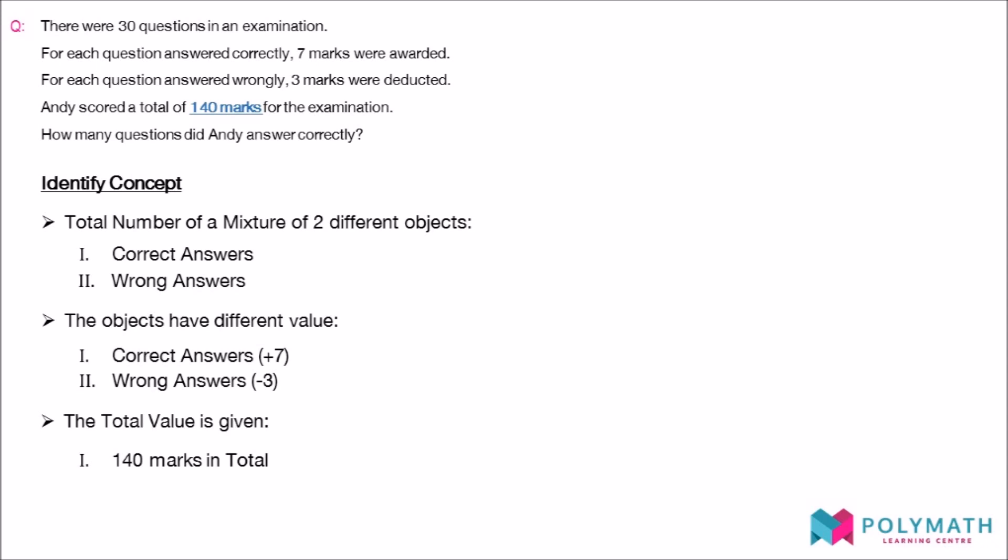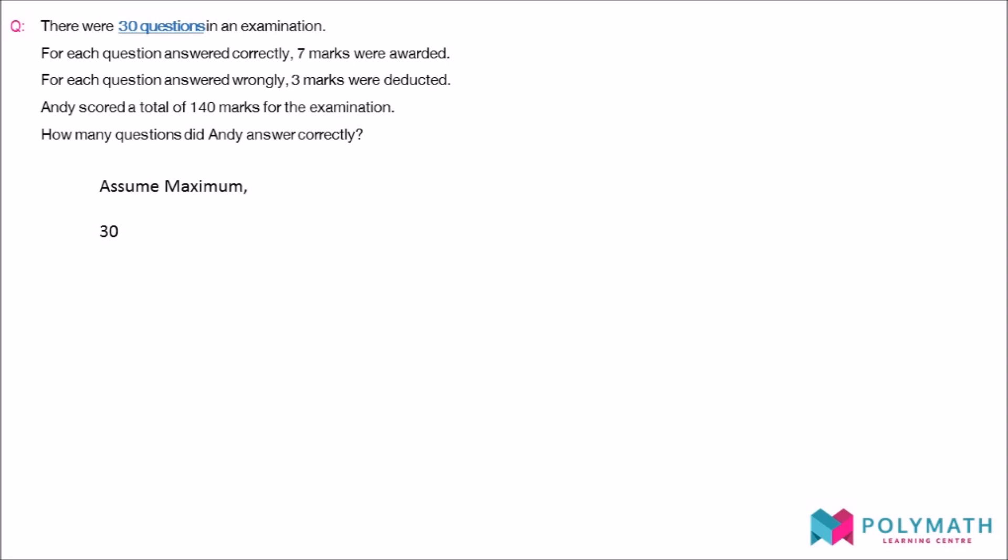As exact number of correct and wrong answers is what we want to find out, we must first have a point to start with. We obtain the starting point by assuming that all 30 questions are answered correctly.